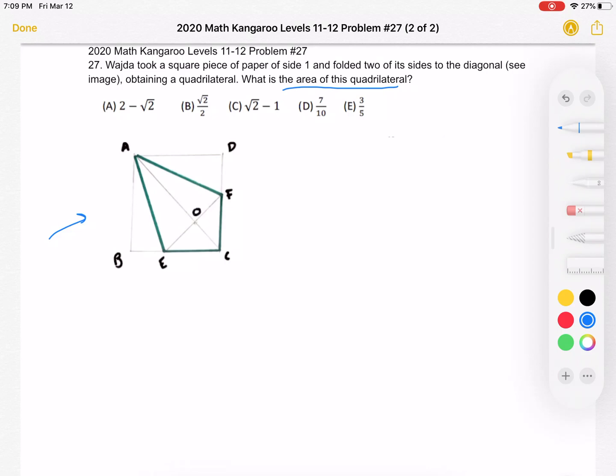Let's remind ourselves how we got this quadrilateral. Wajda folds two of the sides to the diagonal. So B is folded over to point O on the diagonal, and then D is also folded over to point O. And in the process, this little piece is folded.